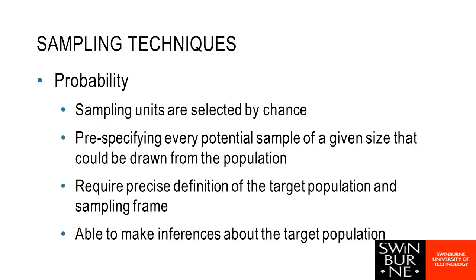Probability sampling, on the other hand, is where we have some sort of random method of selecting our sampling units. Ideally, each unit has an equal chance of being selected, but this can vary method to method and is something that we can address later on when we're doing analysis. The nice thing with the probability methods is they are less likely to be biased and they will allow us to make better and hopefully more reliable inferences about our population of interest.